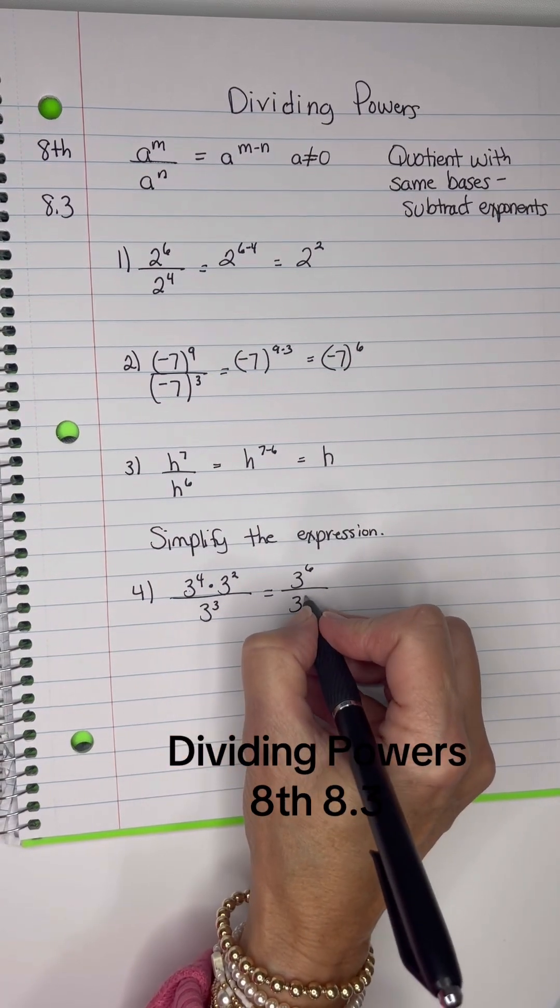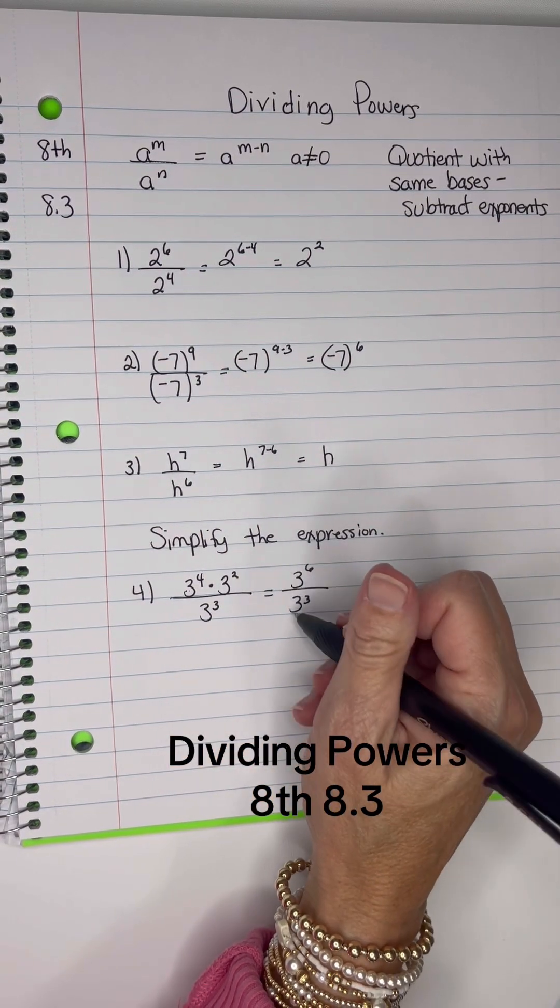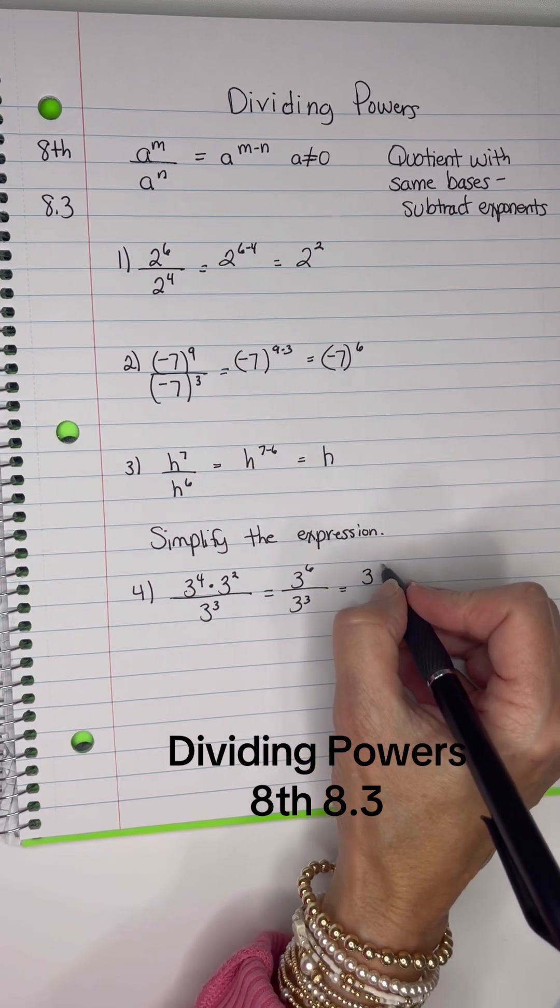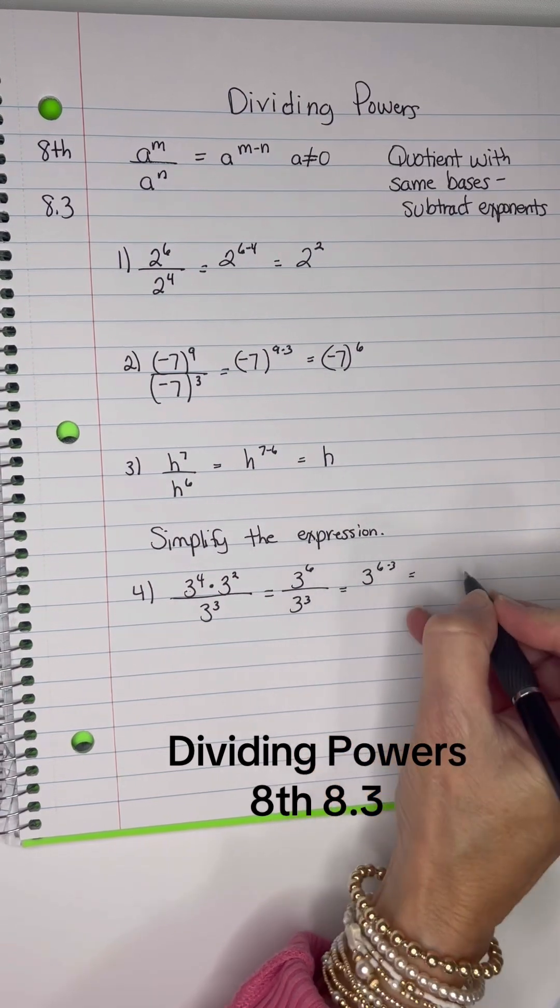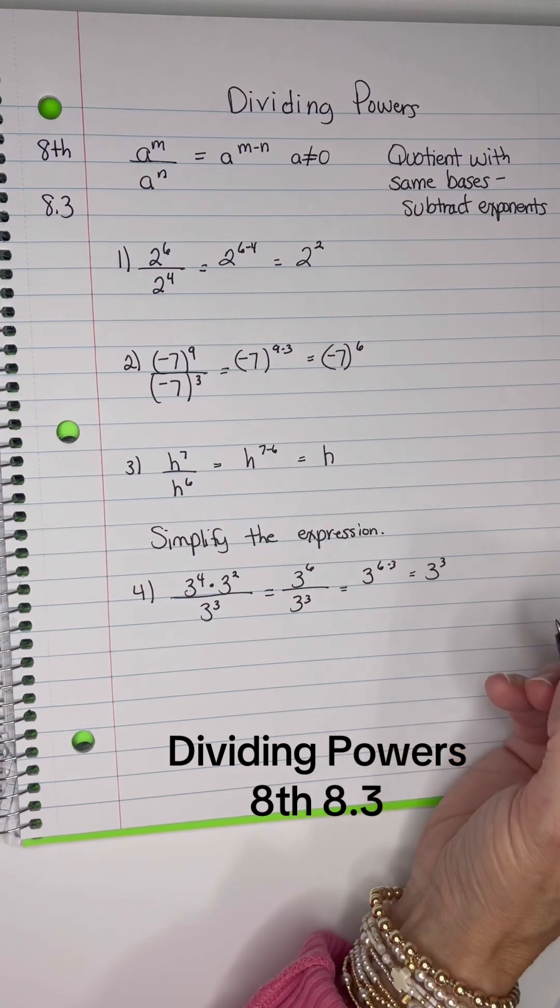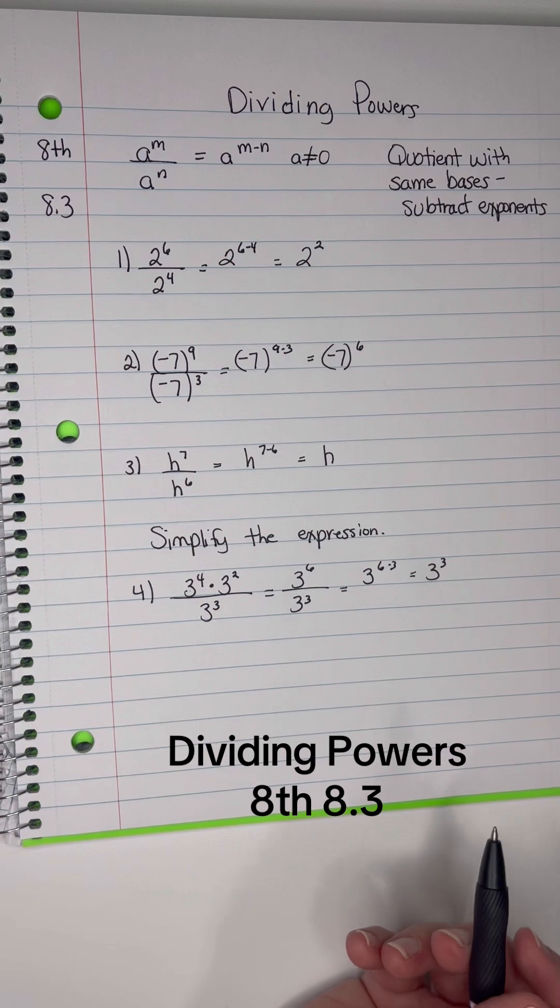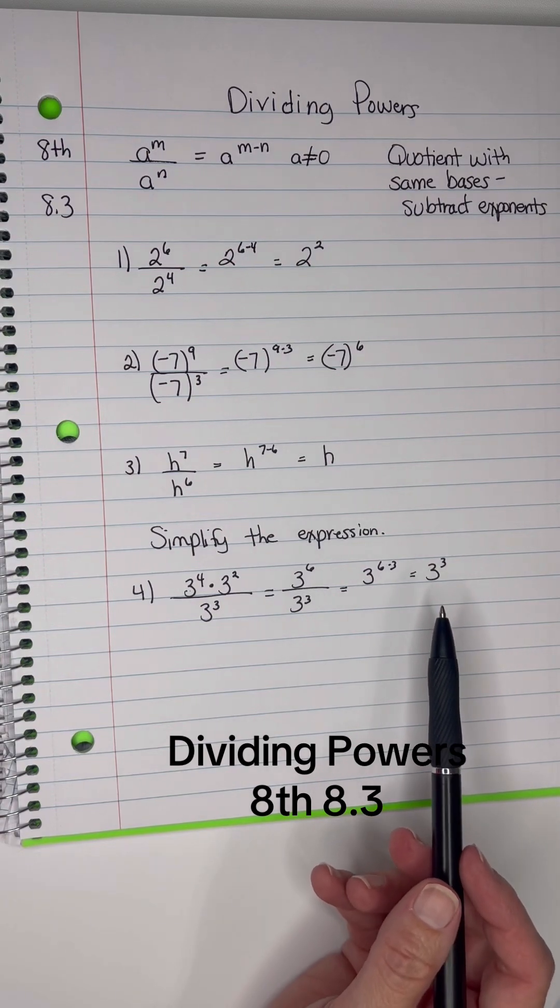And on the bottom, I have 3 cubed. And now I see a quotient. The fraction bar means divide. So I'm going to keep the base 3, and 6 minus 3 is 3. So I have 3 cubed. That is simplified. If I went ahead and was asked to evaluate it, it would be 27.